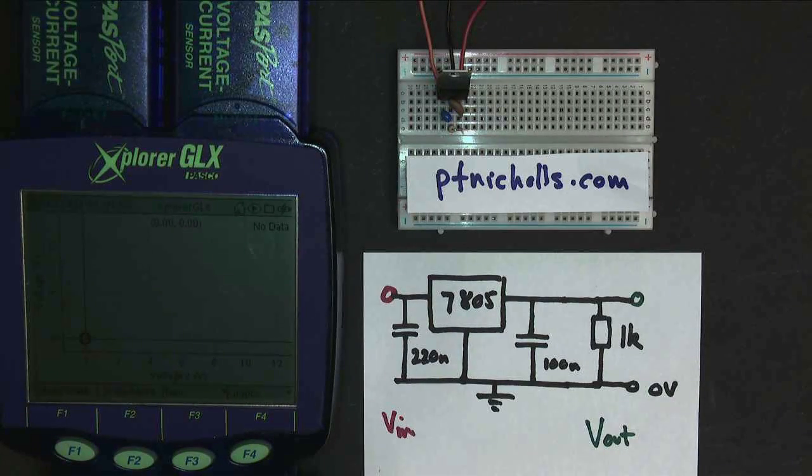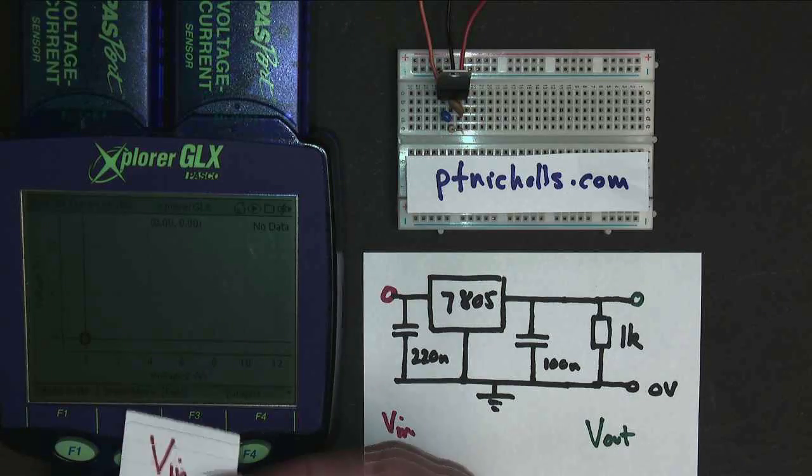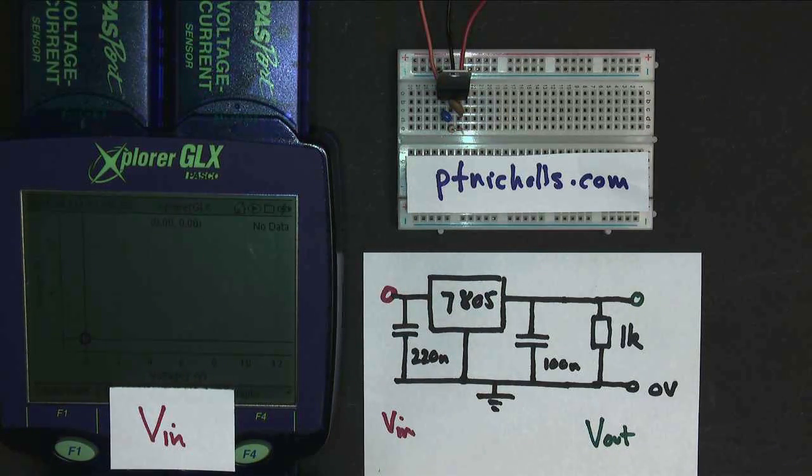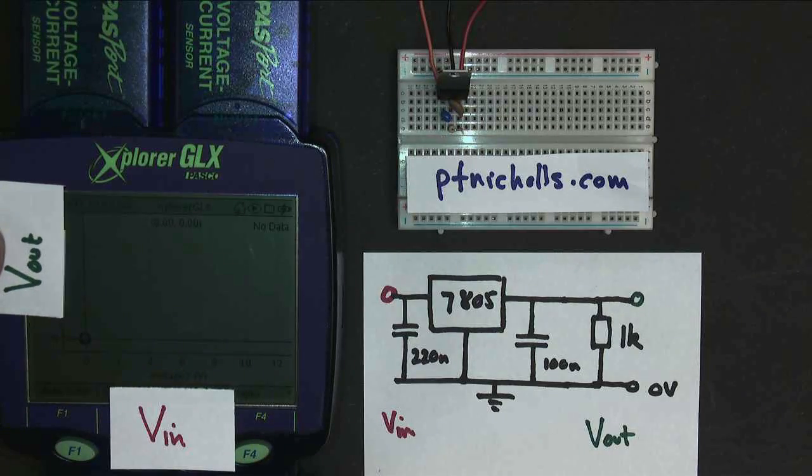Now let's see what happens when we plot this on a graph. So I've arranged it so that the input runs along the bottom, and the output runs up the side. And I'll get the data logger working. And we'll start turning up the voltage. To start with, we get no output voltage. Then there's an interesting little step.